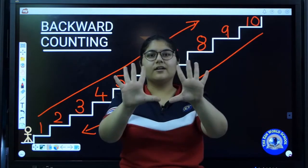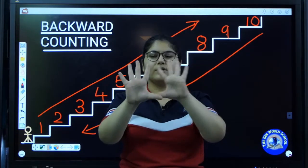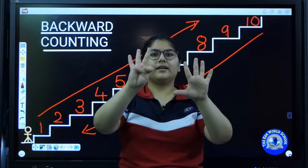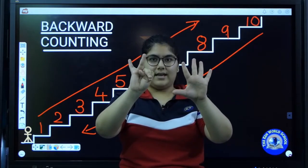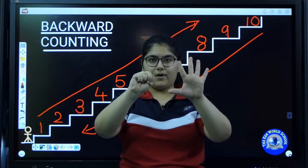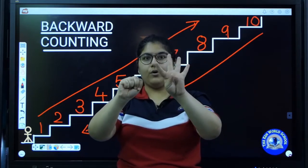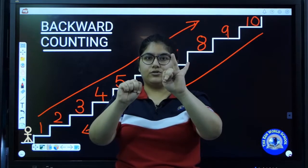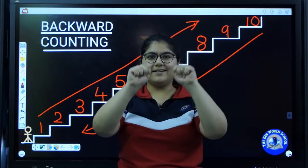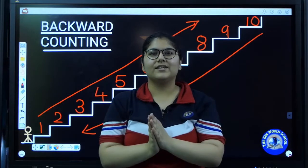How many fingers are there? Ten. So: ten, nine, eight, seven, six, five, four, three, two, one, and then zero. There are no fingers left.